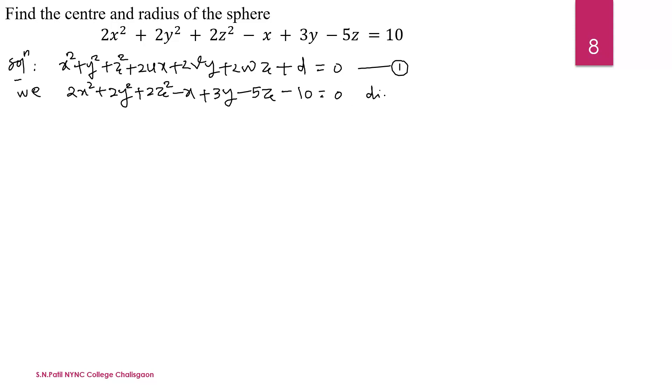Divide by 2. We get x² + y² + z² - x/2 + 3y/2 - 5z/2 + 10/2, that is -5 = 0. So equation number 2.